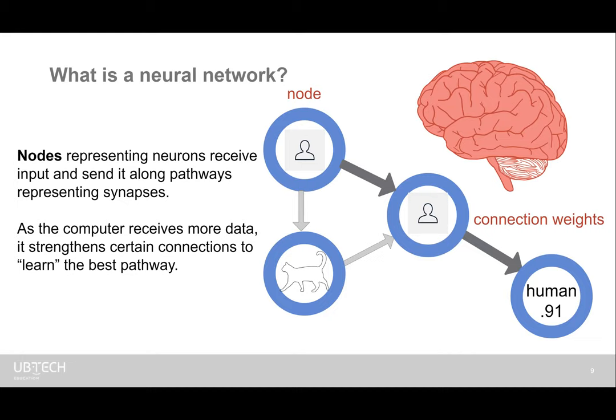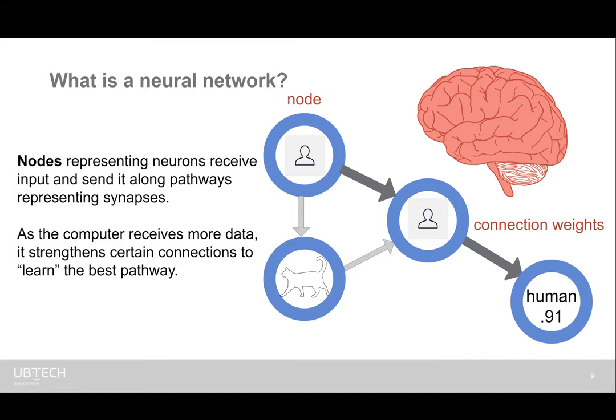The more data and examples you feed in, the higher your confidence level will be. I tell high school students it's just like hitting a tackling dummy in football or taking baseball swings—you have to train and do it over and over, and then it becomes a pathway that's ingrained in you. That's a basic look at what a neural network is, and that's what's happening under the hood of Teachable Machine.